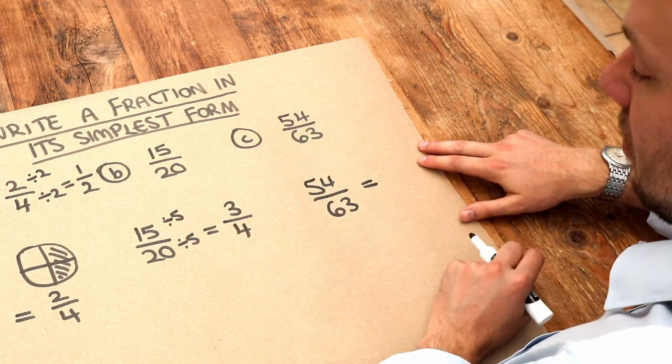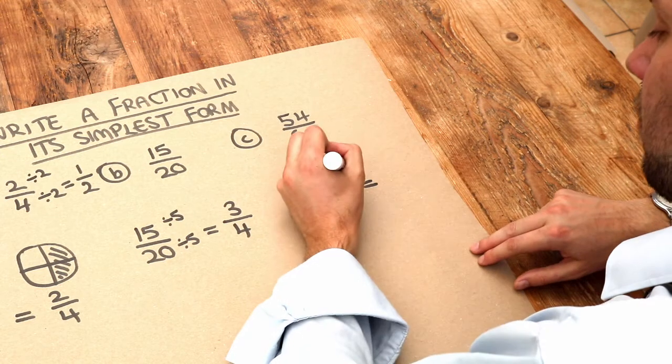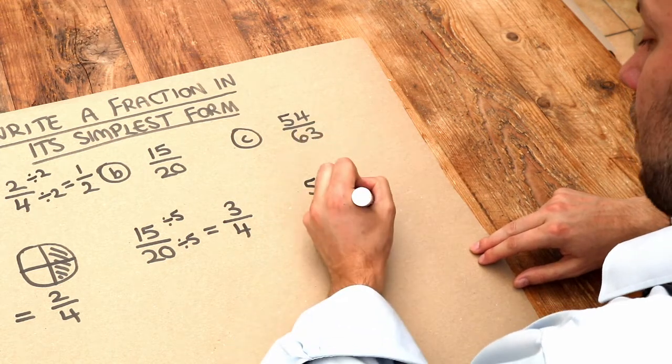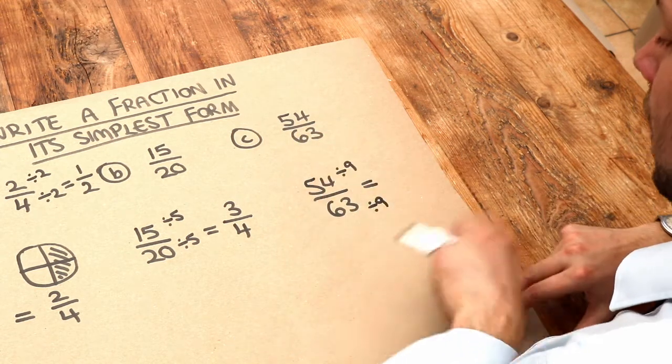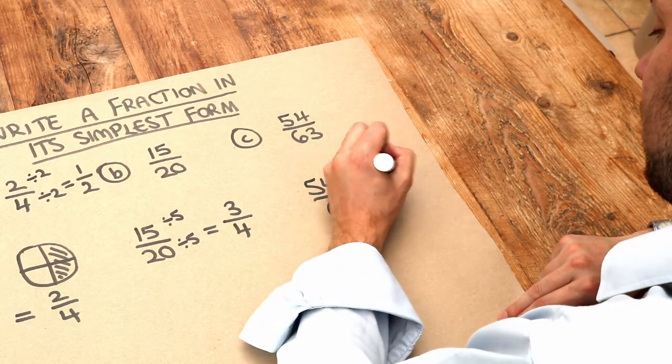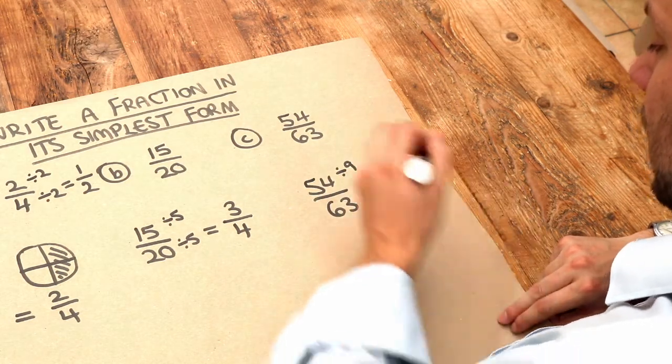Well, they're both in the 9 times table, so we can divide both of them by 9. We put divide by 9 at the top and therefore the same at the bottom—divided by 9. 54 divided by 9 is 6. 63 divided by 9 is 7.